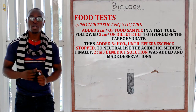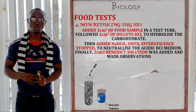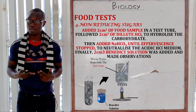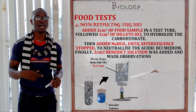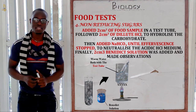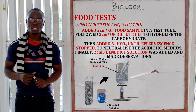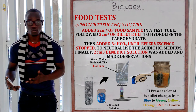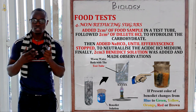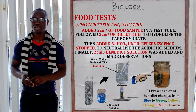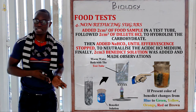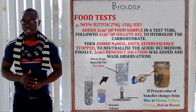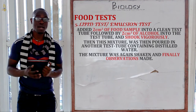After the fizzing has stopped, we add about two centimetres cubed of Benedict's solution. Then we take the test tube and place it again inside the warm water bath to accelerate the chemical reaction. If non-reducing sugar is present, the colour of the Benedict's solution will change from blue to either green, orange, red, or brown — brown indicating a higher amount and green indicating a very low amount.